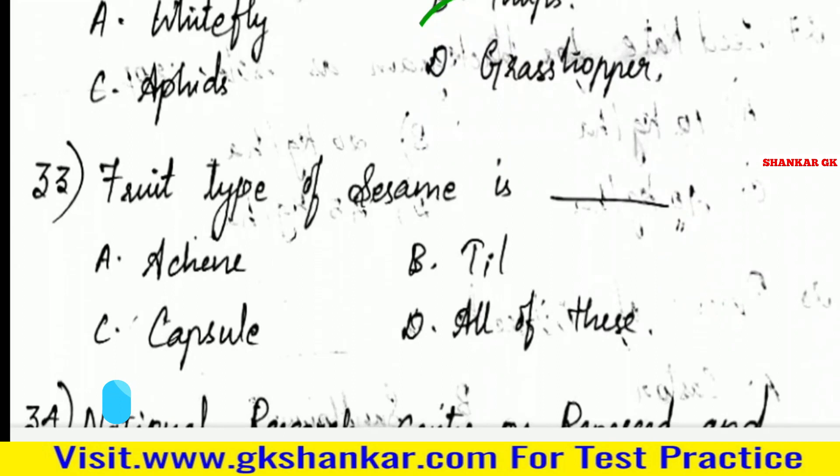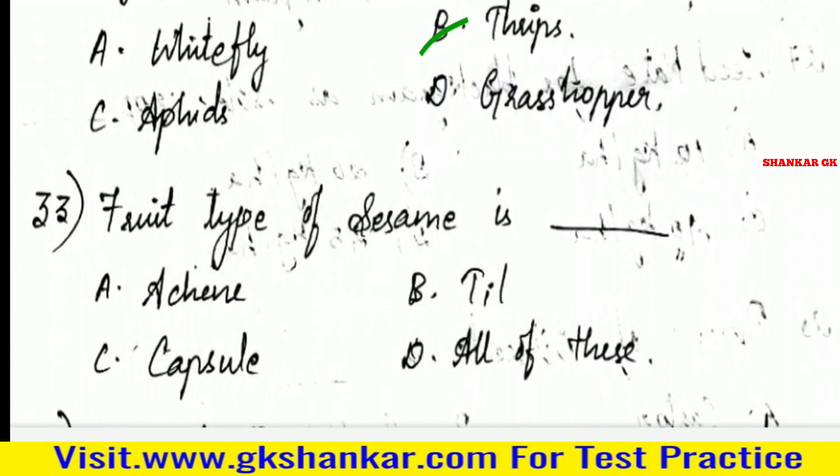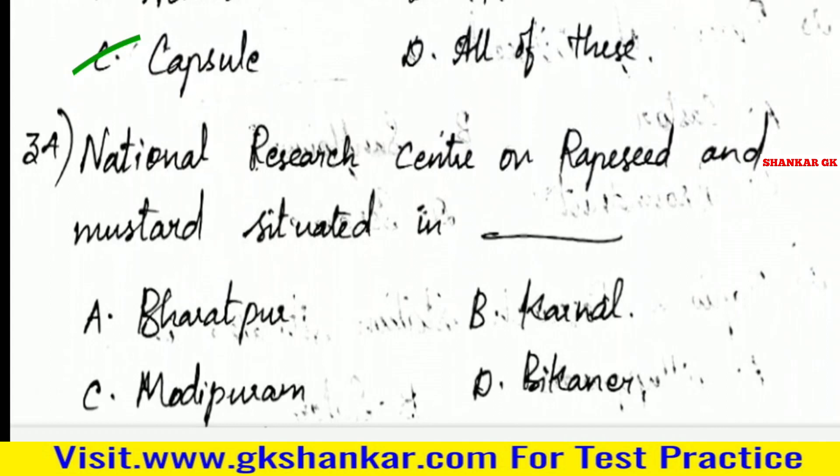Thirty-second question: Fruit type of sesame is — A. Akin, B. Till, C. Capsule, D. All of these. Answer: C. Capsule.